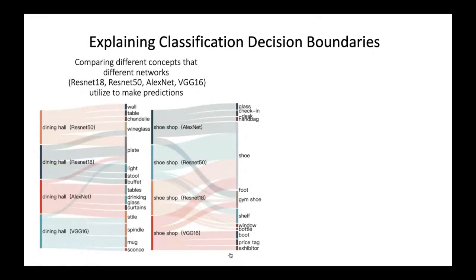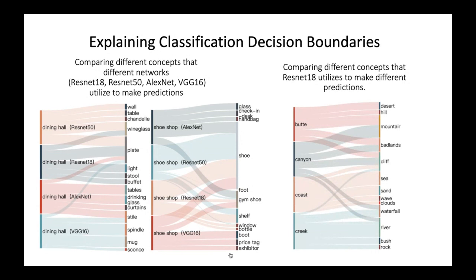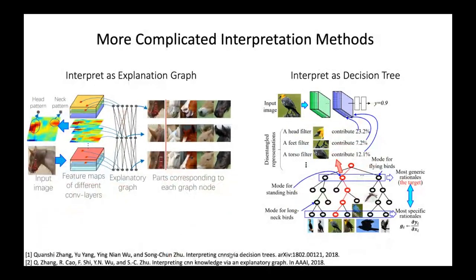We simply measure the correspondence between the weight vector and concept vector — a thicker line represents a larger correspondence. Interestingly, even within the same network predicting different classes, they sometimes use the same concept: for example, bottle and canyon both use cliff as a very important concept clue for prediction. There are also more complicated interpretation methods — you can interpret the network structure as an explanation graph, or interpret it as a decision tree. When detecting a horse, for example, these methods transfer the network into something we already know, like a graph or tree.